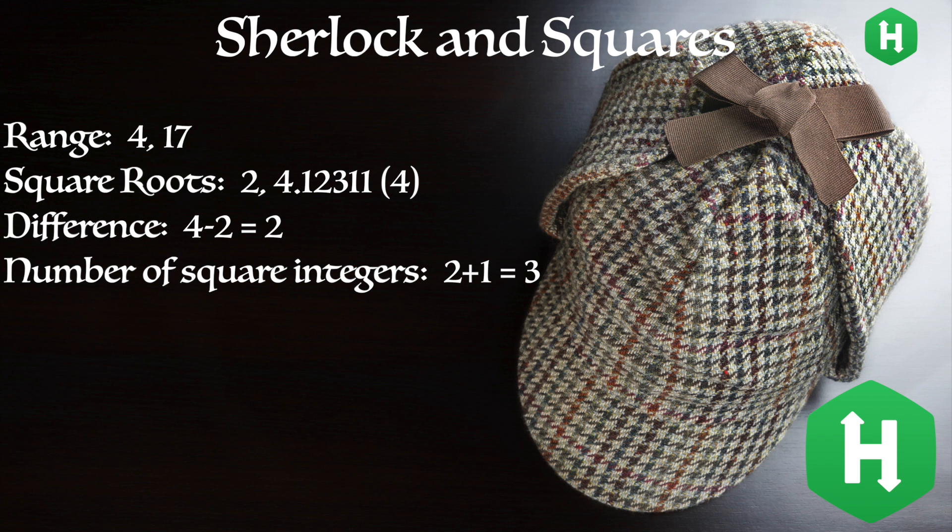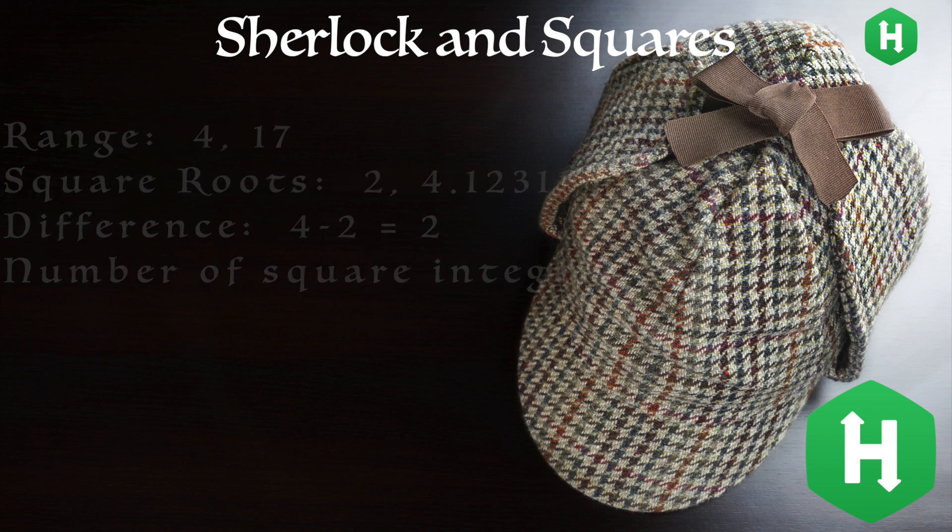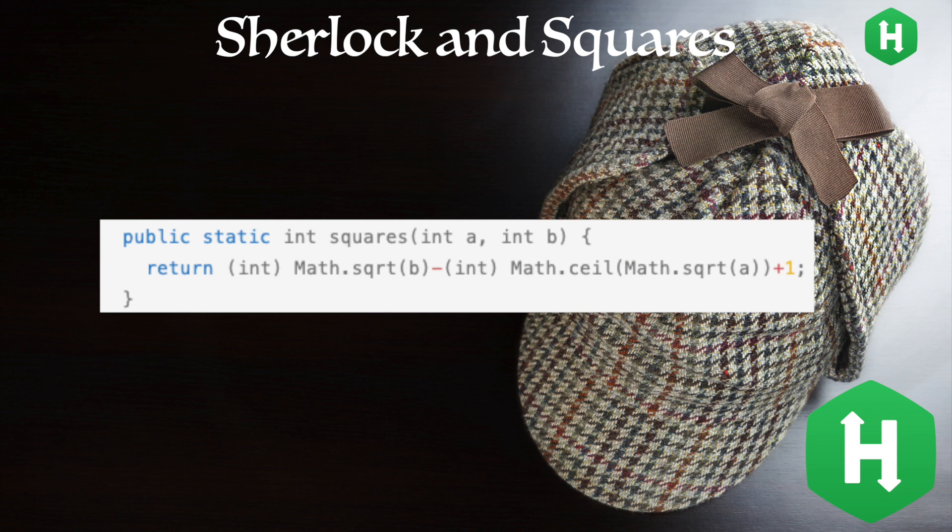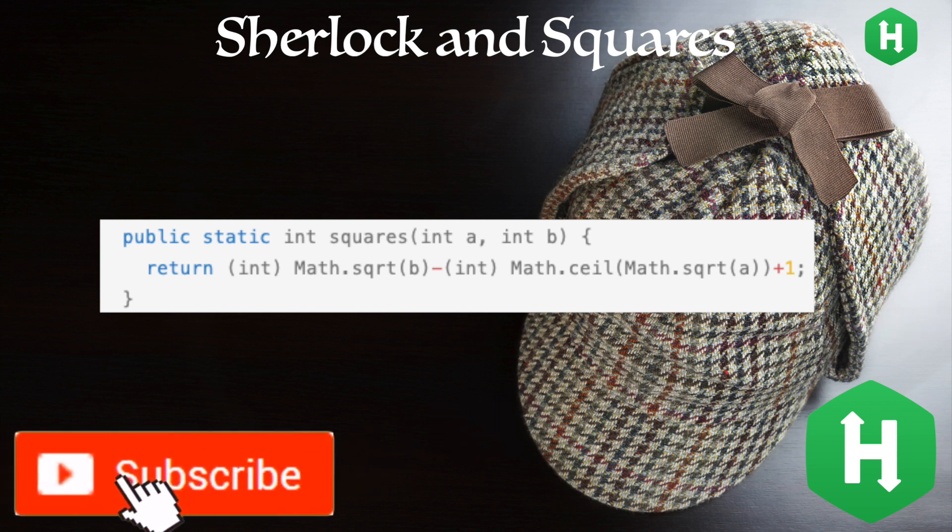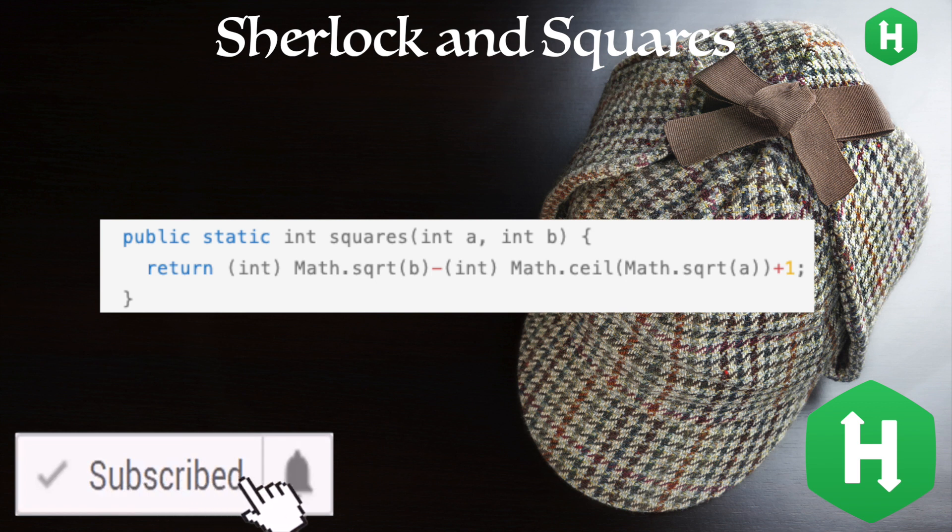This calculation leaves out the first number in the sequence, so we have to add 1 to get the true length. The programmatic solution to the Sherlock and squares problem takes the difference of the square root of b, and the smallest value that is greater than or equal to the square root of a, adds a value of 1, and returns the result to the caller.